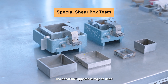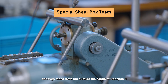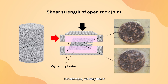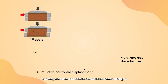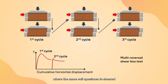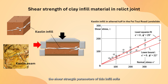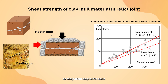The shear box apparatus may be used for some special tests, although these are outside the scope of GeoSpec 3. For example, it may be used to obtain the shear strength of open rock joints. It may also be used to obtain the residual shear strength through a method called the multi-reversal shear box test, where the same soil specimen is sheared three times under the same normal stress. Lastly, it can be used to determine the shear strength parameters of thin infill soils, such as clayline infills formed in some relic joints of the parent saprolitic soils.